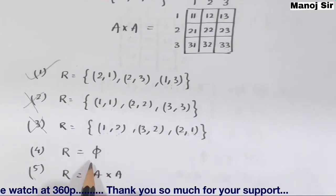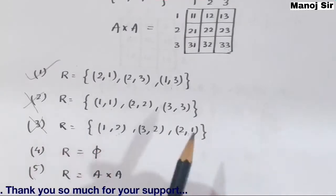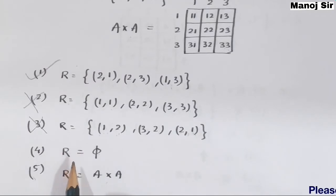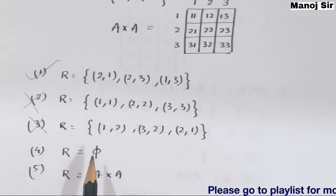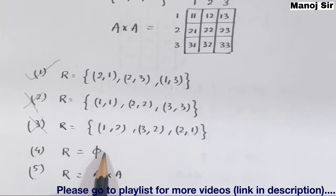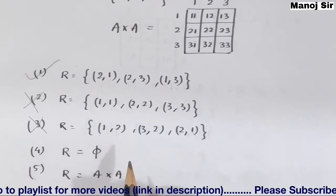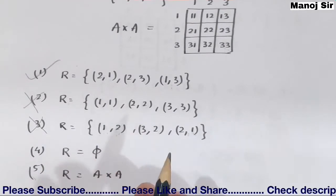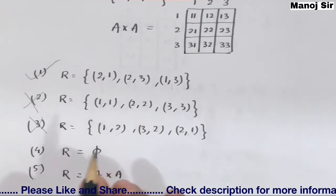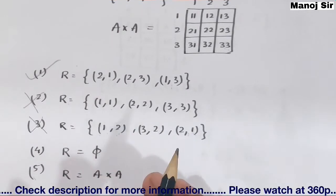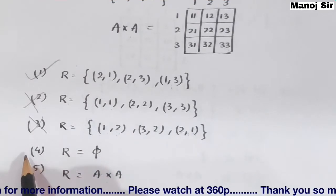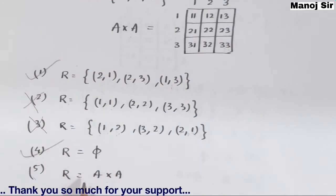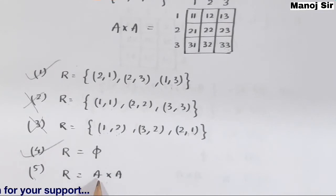Fourth example: R = φ (empty set / null set) — zero elements are present. Since no pair is present, we cannot find the symmetric pair of any element. No element has a symmetric pair, so this relation is asymmetric.